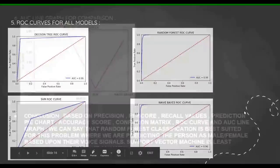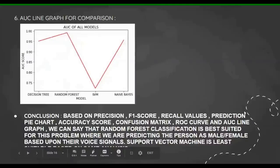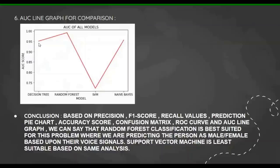At last I have plotted the AUC line graph for comparison. As you can see, starting with decision tree at 0.95, then it goes to 0.99 for random forest, then SVM 0.72, and Naive Bayes again 0.96. As you can see clearly with AUC also, random forest is surpassing all of them.